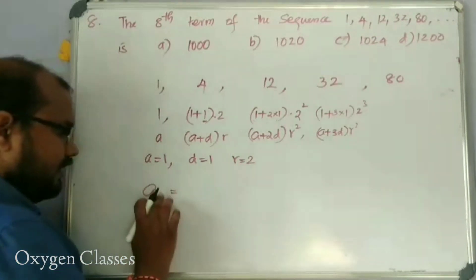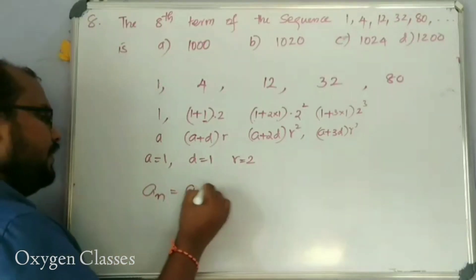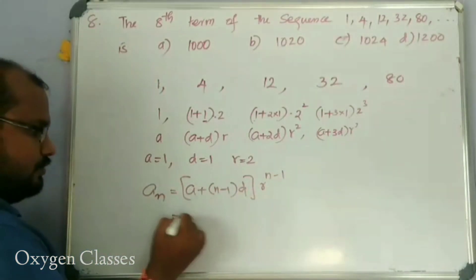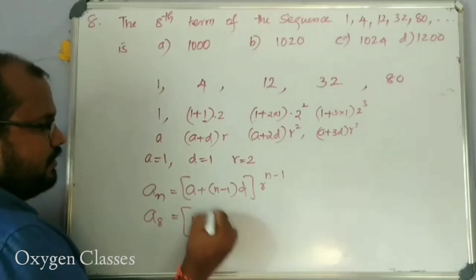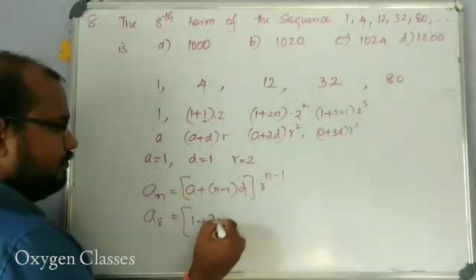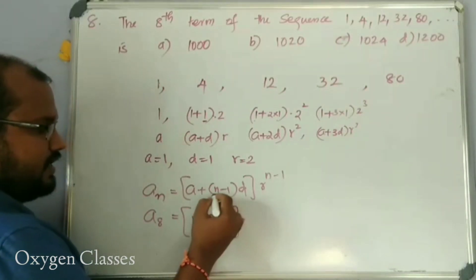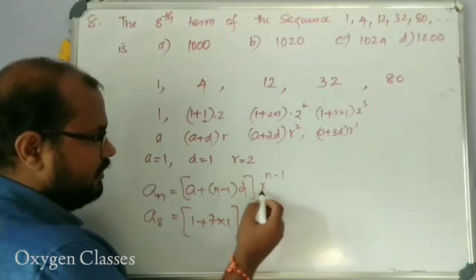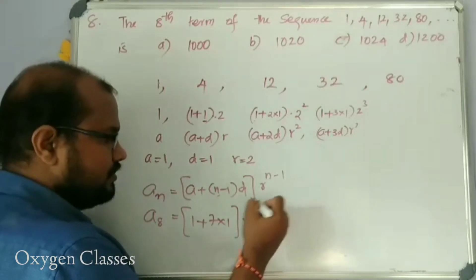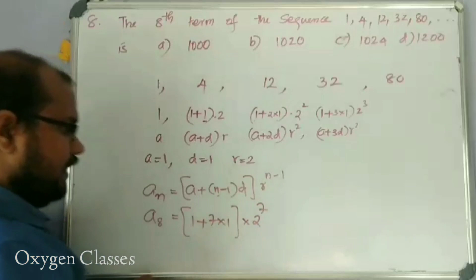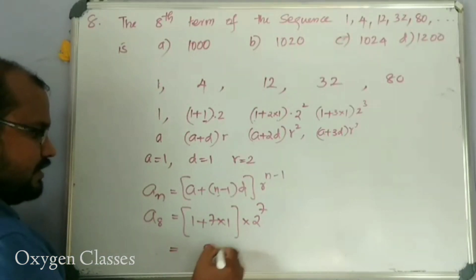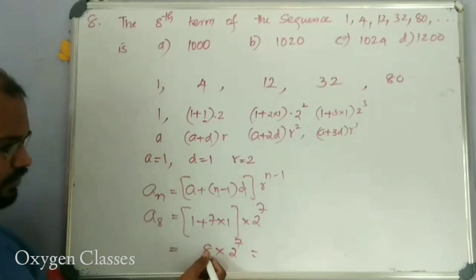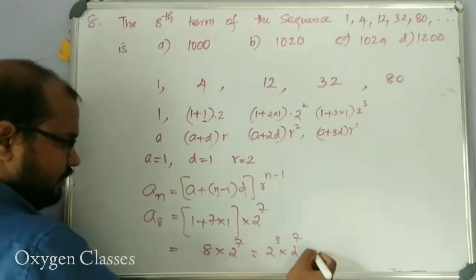The general term is (a plus (n minus 1) into d) raised to (n minus 1). For the 8th term: 1 plus 7d, with d equals 1, that is 1 plus 7 into 1 equals 8. Then 8 into 2 raised to 7.